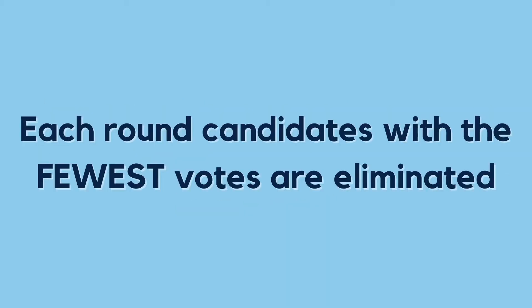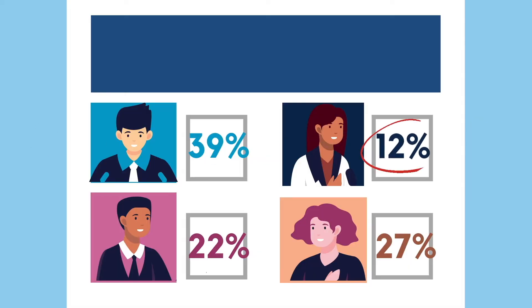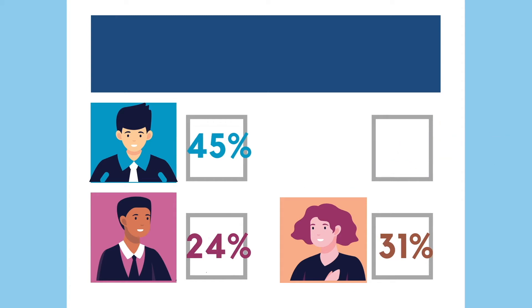In each round, the candidate with the fewest votes is eliminated. So Cassie, only receiving 12% of the vote, will be the first one eliminated from the entire process.